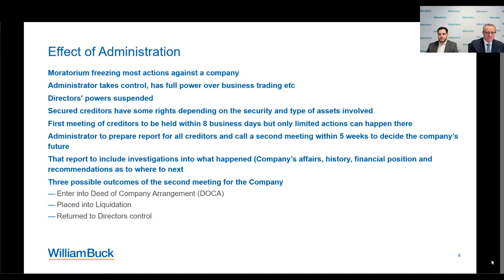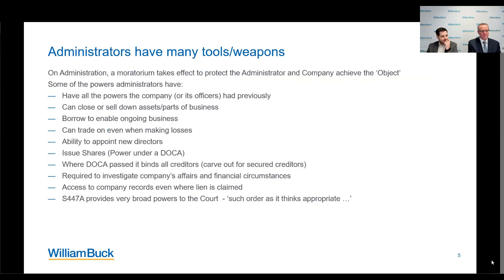There are three possible outcomes at the second meeting of creditors: the company can enter into a deed of company arrangement — a scheme that can allow the company to continue — it can be placed into liquidation, or it can be returned to the directors' control, which is very rarely seen. Additionally, an extension of time can be resolved at that meeting if further work or options need to be considered, or an application to court can be made to extend the timetable.